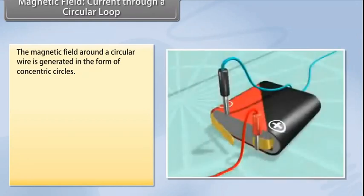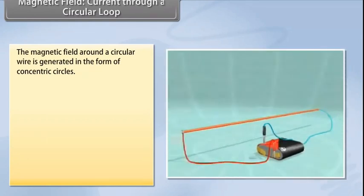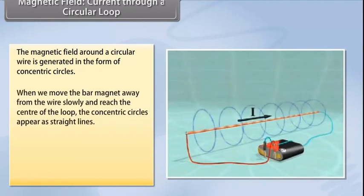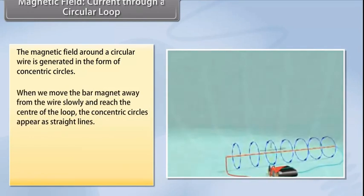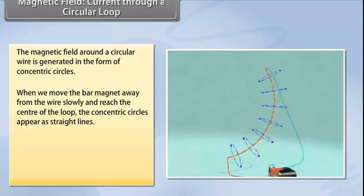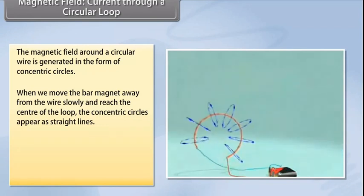Magnetic field current through a circular loop. Let us now look at what happens when the wire through which we passed the current is placed in a circular manner. The magnetic field around it is generated in the form of concentric circles. Try moving the bar magnet away from the wire slowly. By the time we reach the center of the loop, the concentric circles appear as straight lines.